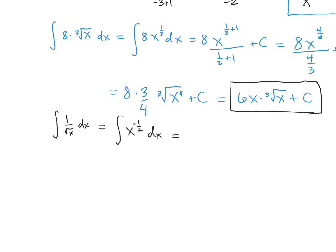Once again, we're going to add 1 to the exponent. So it's going to be x to the negative 1/2 plus 1, divided by negative 1/2 plus 1, plus C. So that's x to the 1/2 divided by 1/2 plus C.